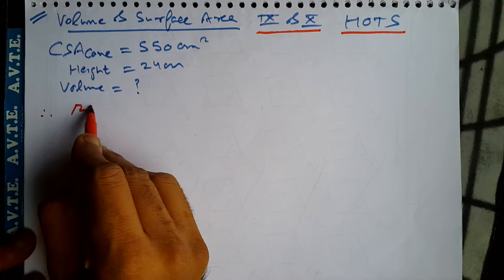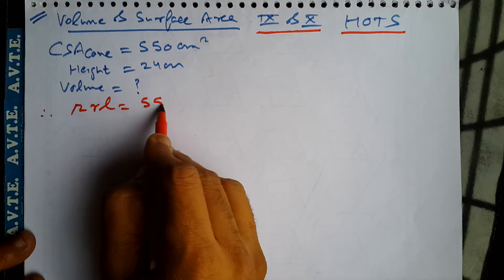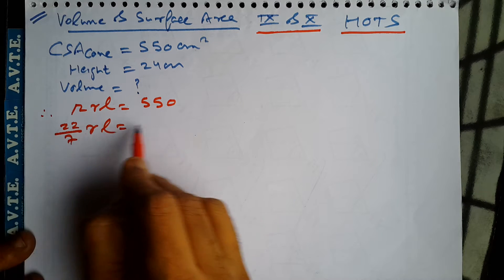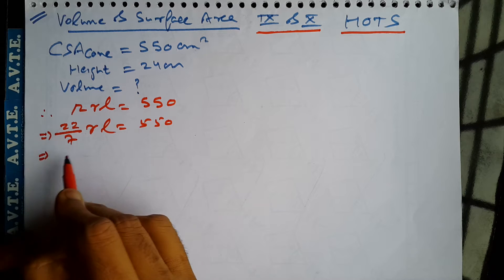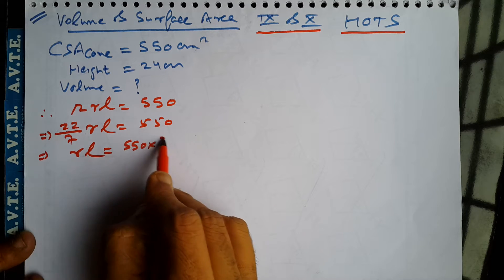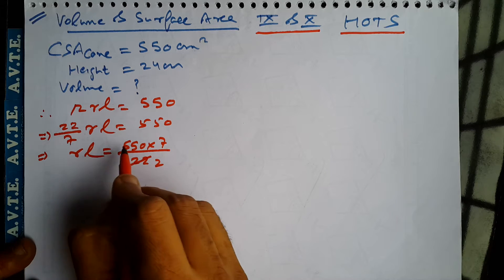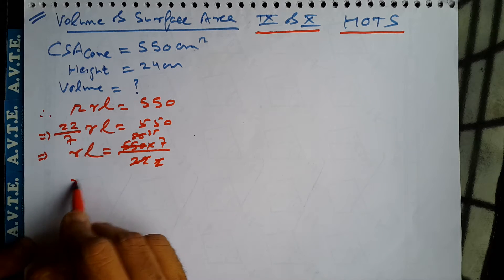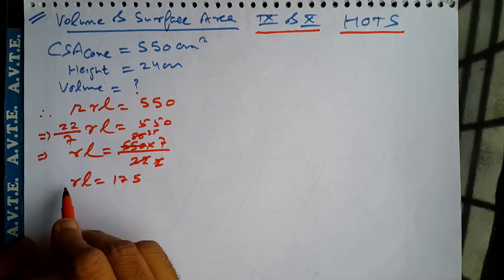Given is the surface area of cone is 550. That means 22 by 7 into RL is equal to 550. So we have RL is 550 into 7 by 22, giving us the value of RL as 175.